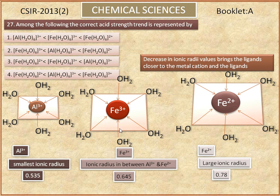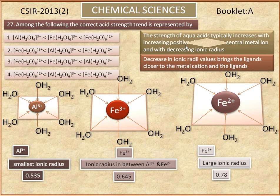In Fe 3+ complex, the closeness lies in between Al 3+ and Fe 2+. The strength of aqua acids typically increases with increasing positive charge of the central metal ion and with decreasing ionic radius.